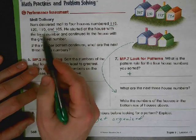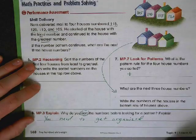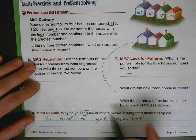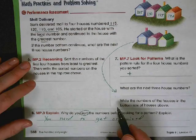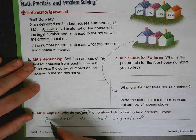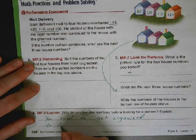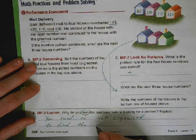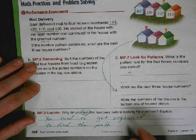So if you don't sort these - 120, 110, 105, 115 - if they're not in order from greatest to least or least to greatest, you're not going to be able to figure out the pattern. So you need to get organized to find the pattern.